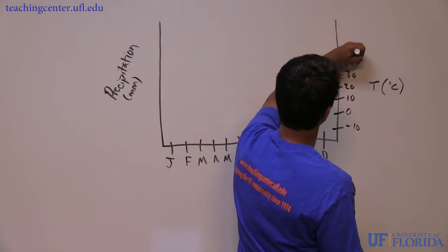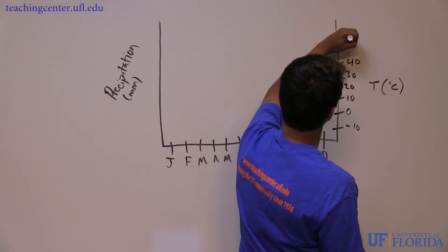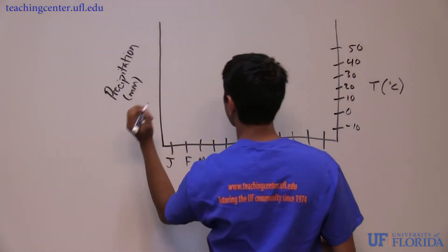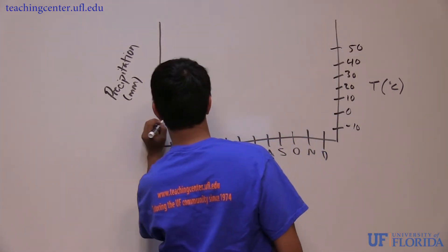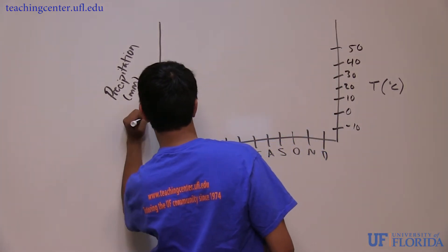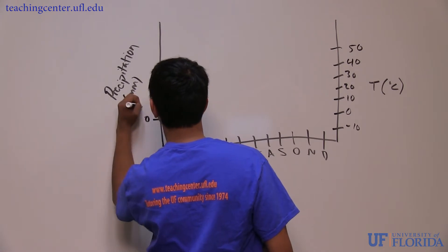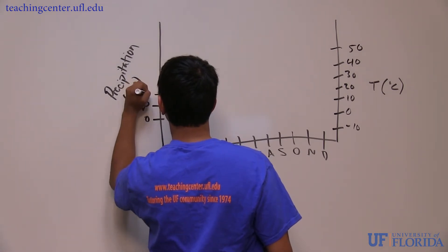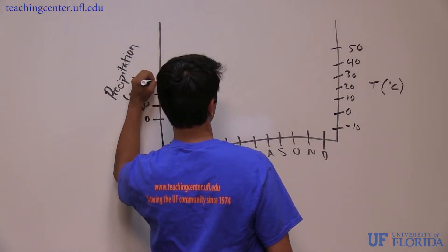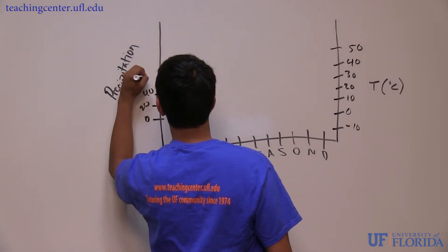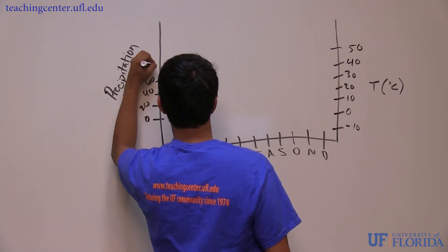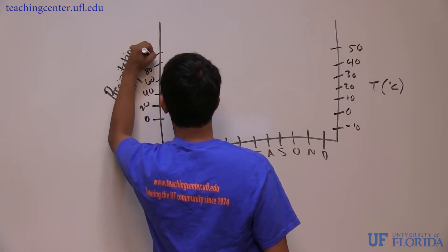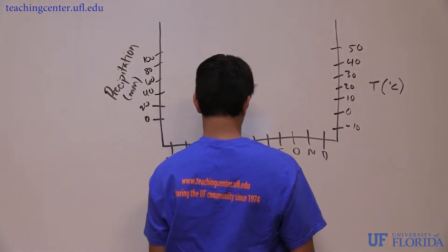The rule of thumb is that for every 10-degree increase in temperature, you need 20 millimeters of rain to maintain vegetation growth. That's why the scale for the precipitation axis is twice the scale of the temperature axis, with their zeros lined up. This allows us to quickly determine when a biome can support vegetation just by looking at the graph.